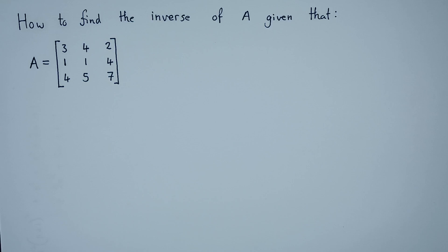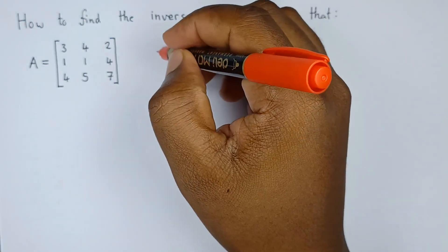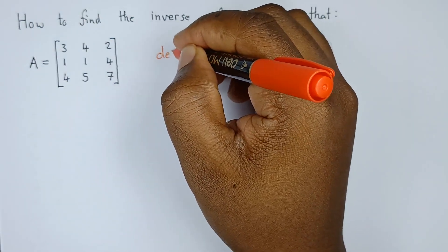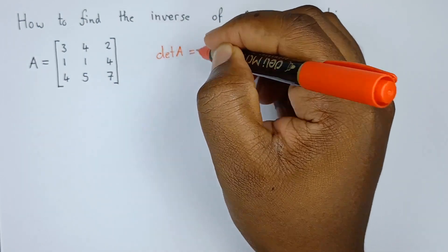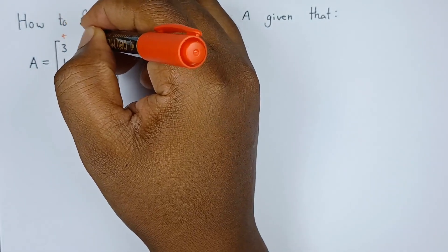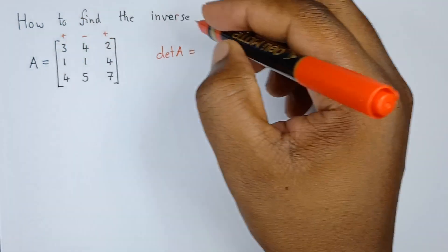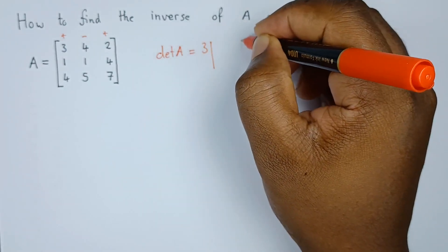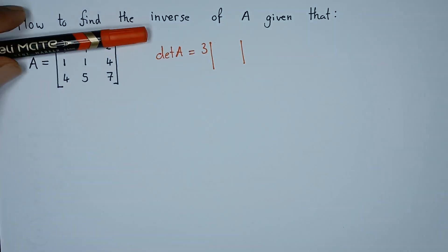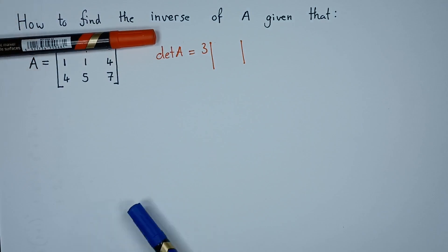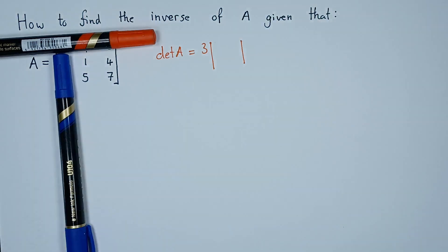To find the inverse, the first thing we have to find is the determinant — det(A). The first thing we have to do is set up a plus, minus, plus pattern like that. Once we do that, we're going to get the 2x2 matrices formed when we cover a particular row and column. So for the first row, which is 3, 4, and 2, we start with 3. Then what is the 2x2 that is formed? We need to hide the first row and the column for 3.